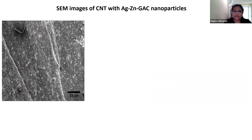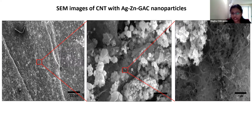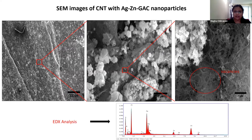This is a SEM image of carbon nanotube hybrid material in which we integrated silver, zinc, and granulated activated carbon nanoparticles inside the CNT sheet, all during the synthesis process. Taking a closer look, we can see the integration of the particles with the nanotube sheet. Even at micrometer range, the CNT sheet still has vacancies after nanoparticle integration, which we can use for filtering applications or to capture viruses and other contaminants. To confirm the presence of nanoparticles in our hybrid material, we performed EDX analysis, which confirmed that silver, zinc, and carbon are present in the material.